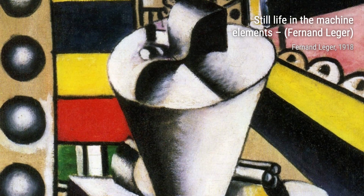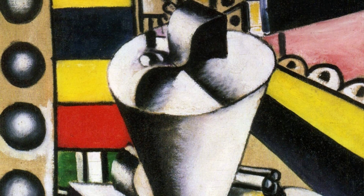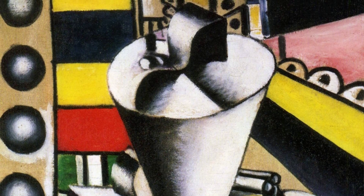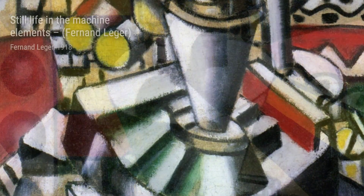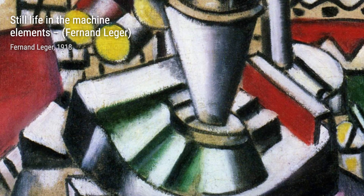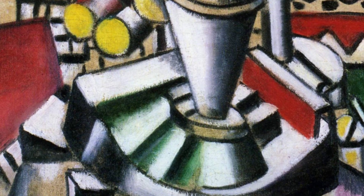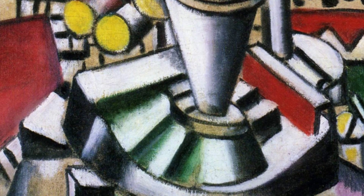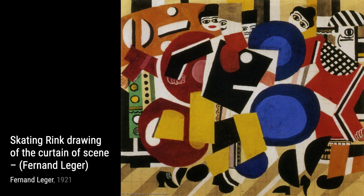Fernand Léger was a French painter, sculptor, and filmmaker. He started off with his own unique form of cubism, which later evolved into a more figurative and populist style. His bold and simplified approach to modern subject matter has even been considered a precursor to pop art.